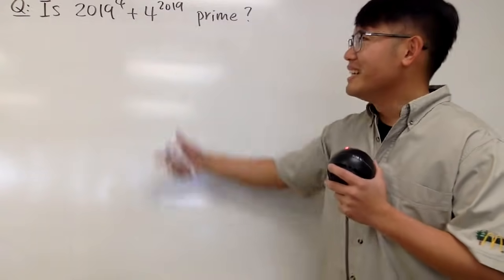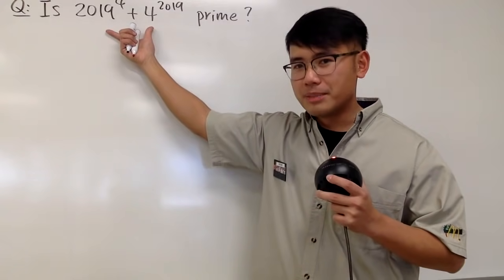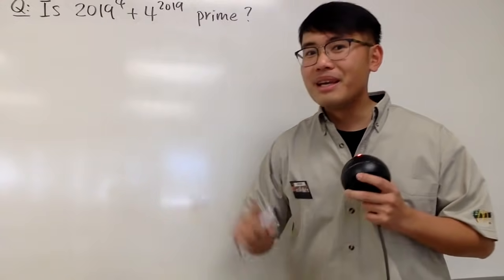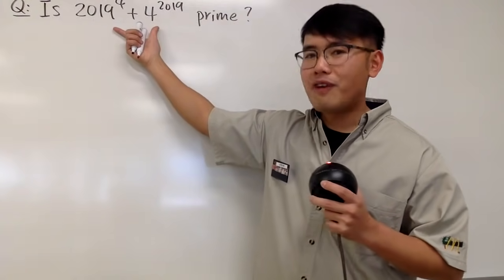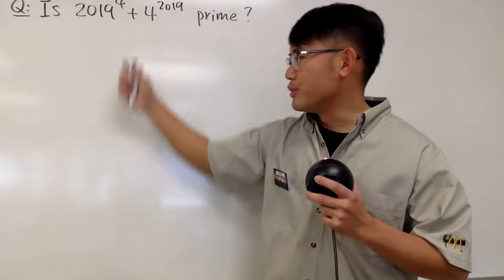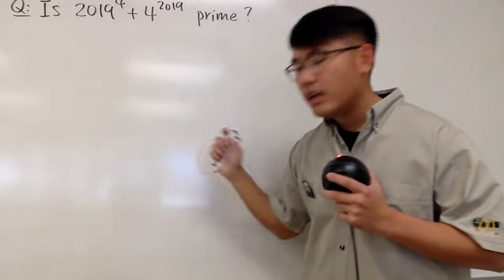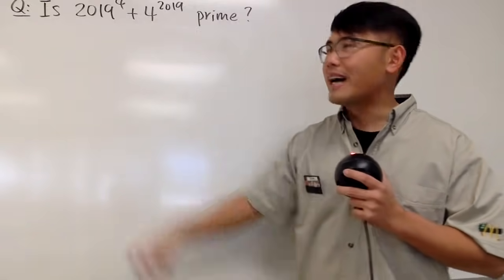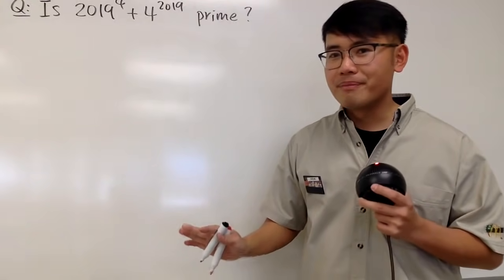First of all, let me tell you, it's actually pretty hard to show if a number is prime. It's actually much easier to show if a number is not prime, because we can just try to factor this. If we can factor this to get a product of two numbers, and you also have to make sure these two numbers are not 1, then we can conclude that this is not prime. Then we'll be done.